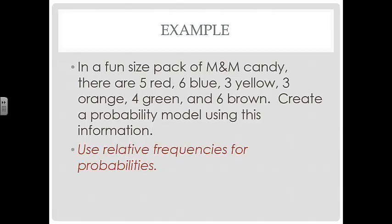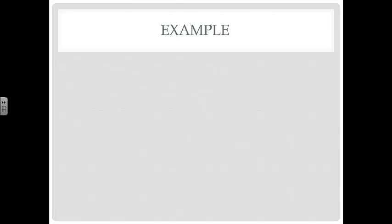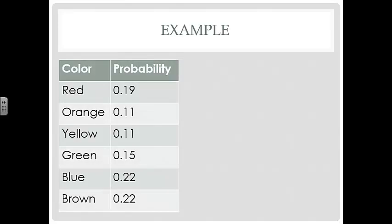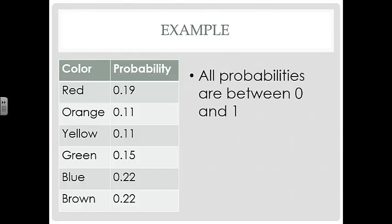All right, so we're going to use relative frequencies for the probabilities. So here's our probability. Again, we just took the relative frequencies to find each of our probabilities. All the probabilities are between 0 and 1, so it satisfies that condition. And then if we add them all together, they do add up to 1. So this is a probability model. If they didn't all add up to 1, it would not be a probability model.